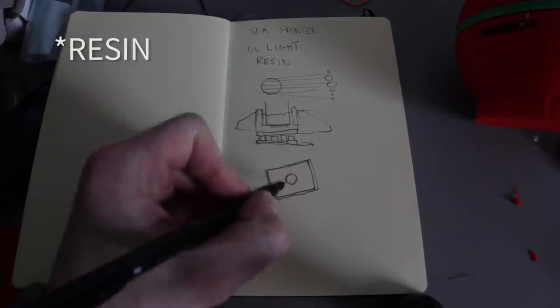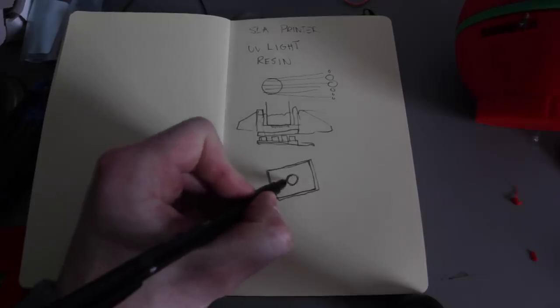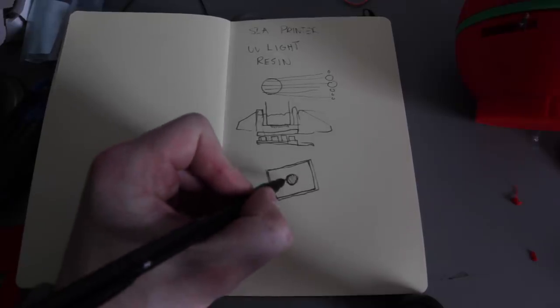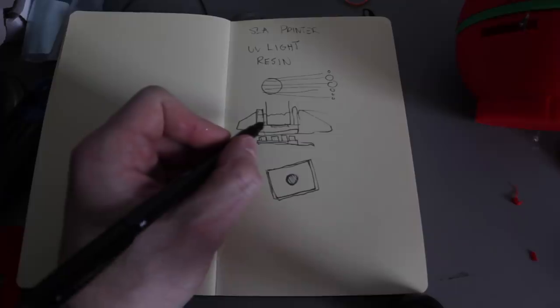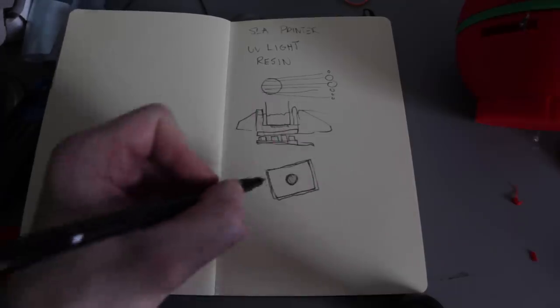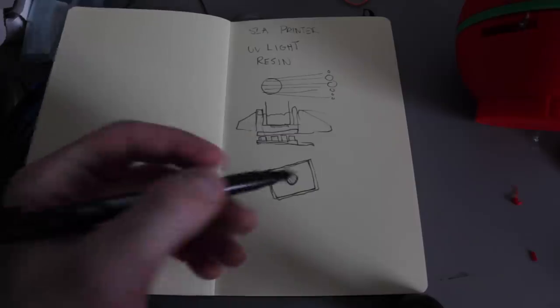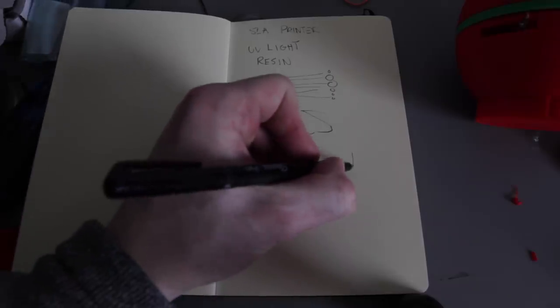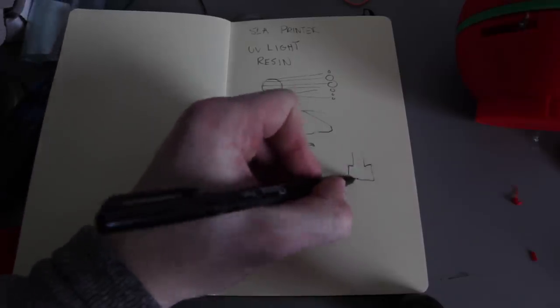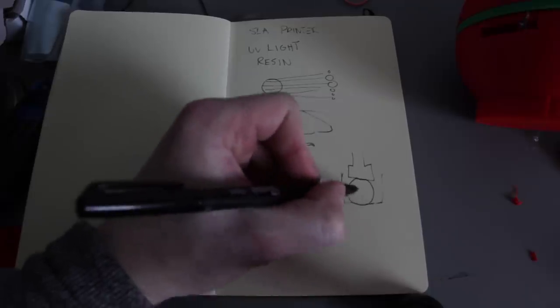And the UV will only harden where the light is shining through. So you change this, you turn off the lights, turn it back on, you move the platform up one step. You change the image, you do that, and you repeat it, and then you end up with something on the platform when this used to be liquid.